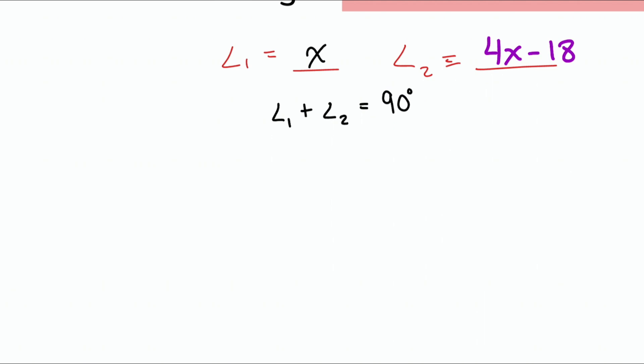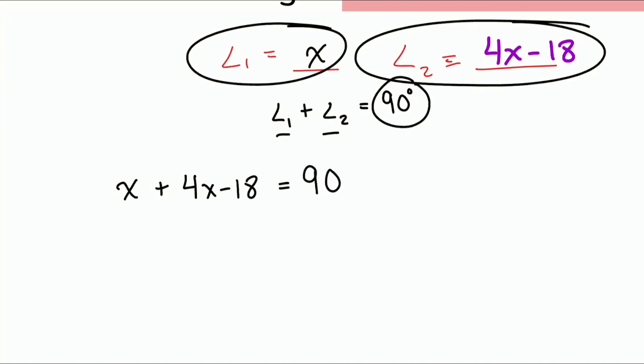Because we know that these angles are complementary, what we're going to do is we're going to say that if we add those angles, so the first angle X plus the second angle 4X minus 18, we add those together and we're supposed to get 90 degrees. Booyah, so we're good to go.